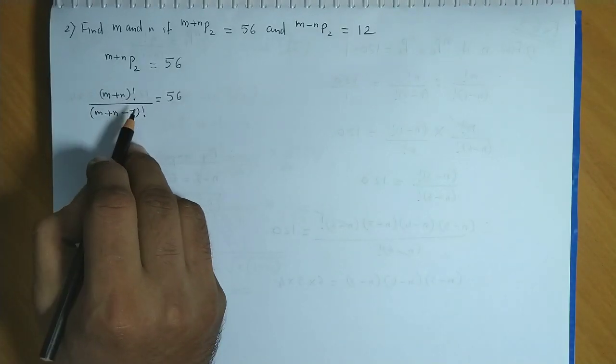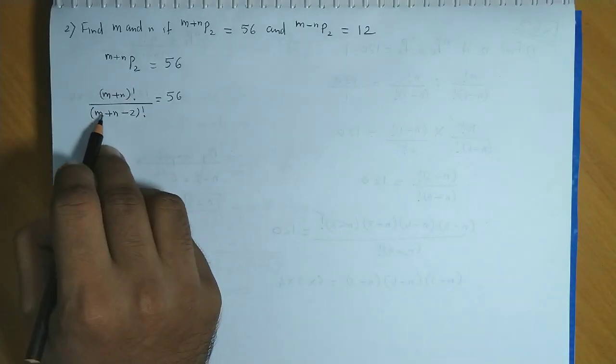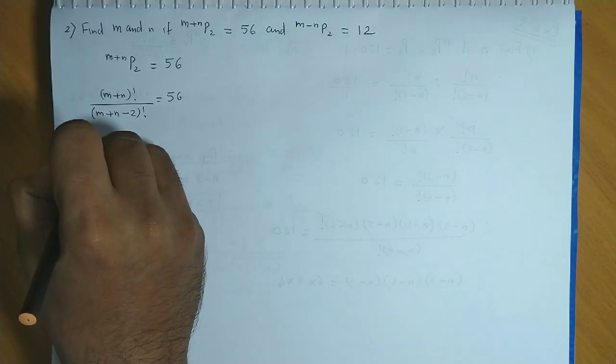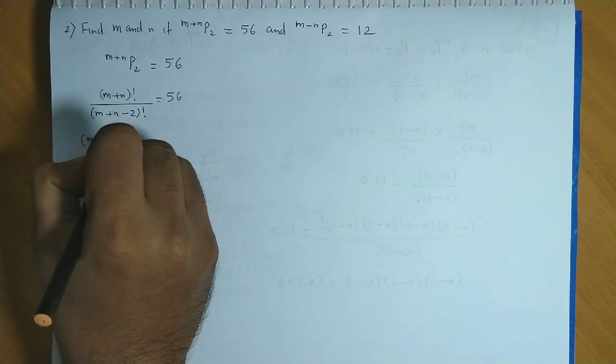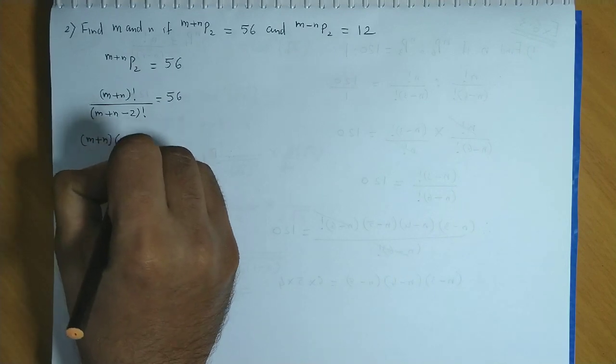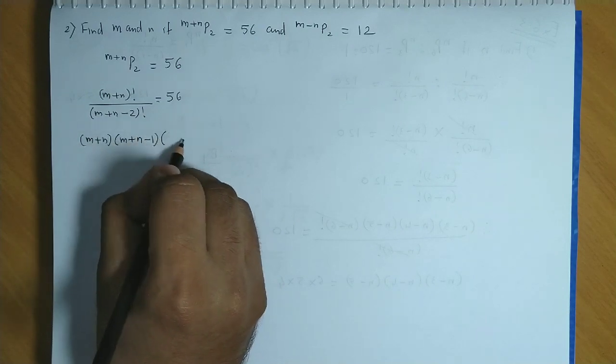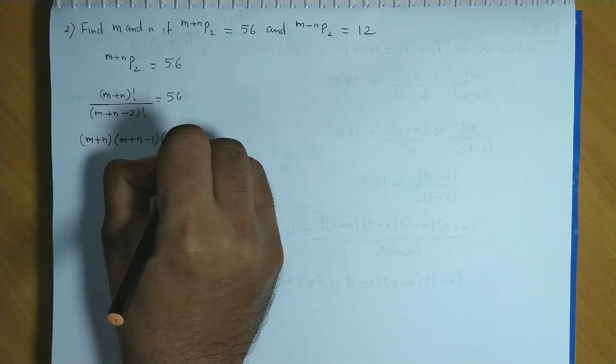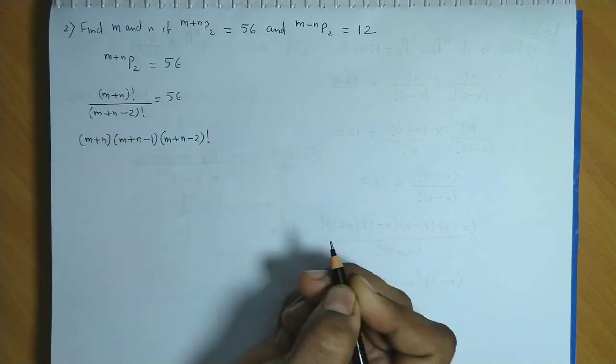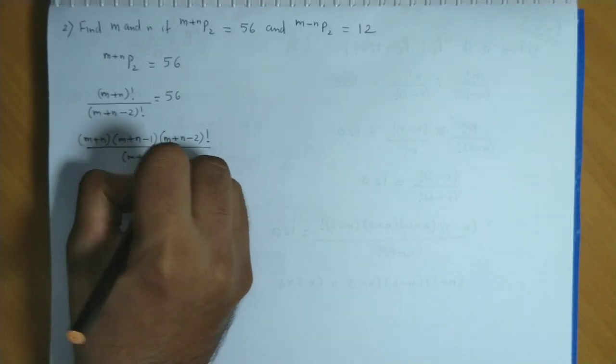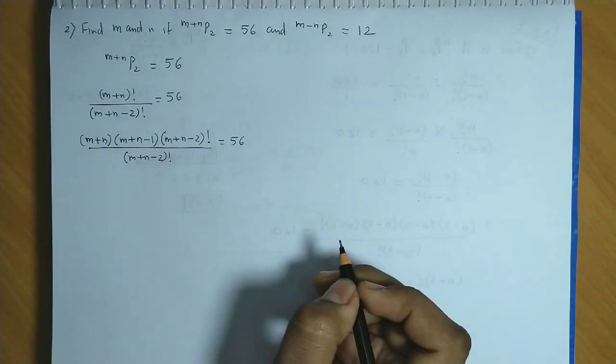Now m plus n factorial is greater than m plus n minus 2 factorial. So we split up to m plus n minus 2 factorial. So we could write this as m plus n. Now if we go back one step, this reduces by one. So you have m plus n minus 1. Again if we go one step backwards, we reach m plus n minus 2 factorial divided by m plus n minus 2 factorial is equal to 56.